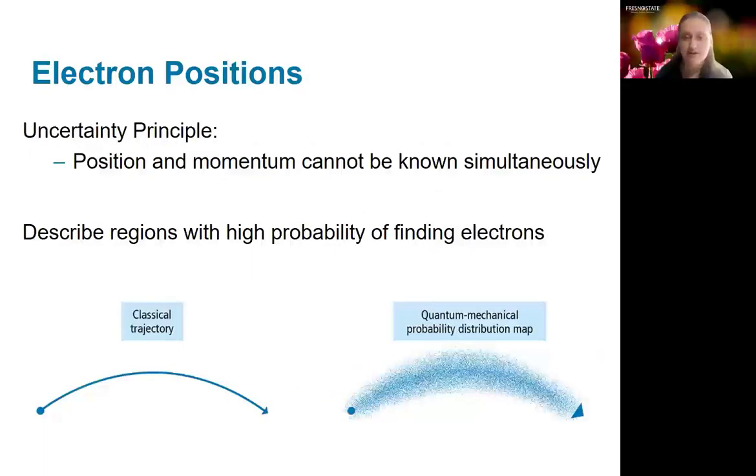As a consequence of quantum mechanics, we have the uncertainty principle, which is the idea that you can't know both position and momentum simultaneously. So we can't know exactly where our electrons are and how fast they're going, which means that we can't really do a trajectory type calculation where if we know that information, we can predict where the electron's going to end up later.